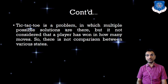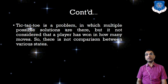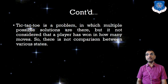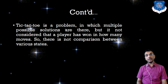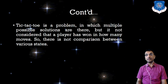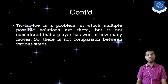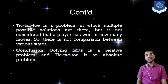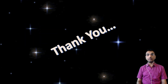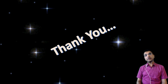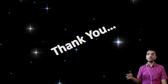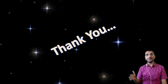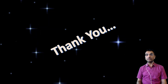The previous Marcus problem is a relative problem because so many conclusions and ways to solve the problem are possible. Tic-tac-toe is a problem where multiple solutions exist, but it is not considered how many moves a player took to win — there is no comparison between various states. So solving a fact is a relative problem and tic-tac-toe is an absolute problem. The remaining characteristics will be covered in the next session, completing all seven characteristics of problems.